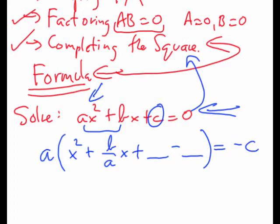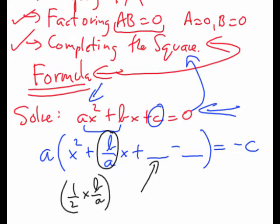Just try to think of the procedure — what I would do if a, b, and c were specific numbers — because I'm doing the exact same thing I did in the last video with completing the square. Here comes the tricky part: in order to get this number, I'm going to take half of b over a. Half of b over a, which is one-half times b over a, squared, would be b squared over 2a, squared, which equals b squared over 4a squared.